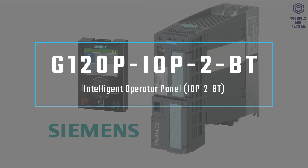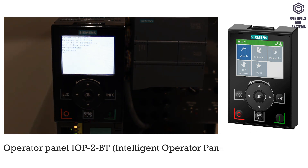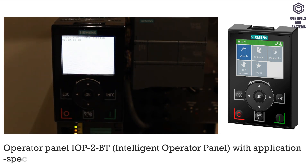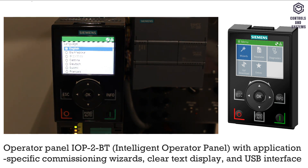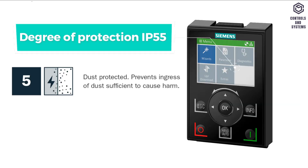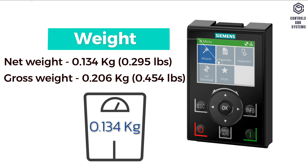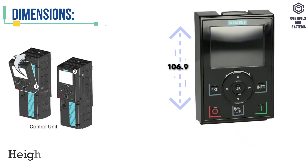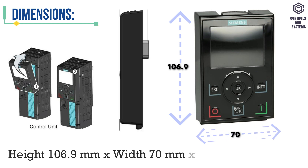IOP2BT Operator Panel: IOP2BT means Intelligent Operator Panel, with application-specific commissioning wizards, clear text display, and USB interface. Degree of protection is IP55. Weight is 0.134 kg. Dimensions: Height 106.9mm, Width 70mm, Depth 19.7mm.